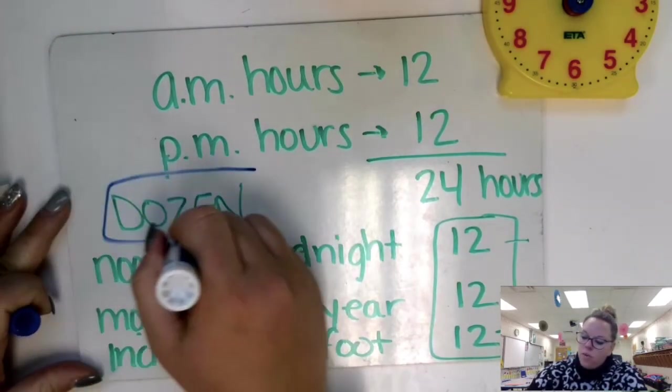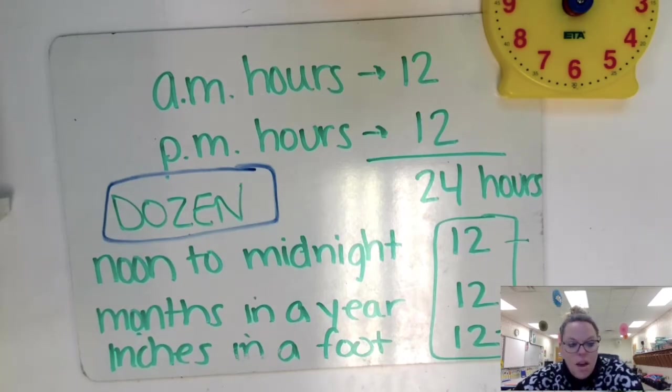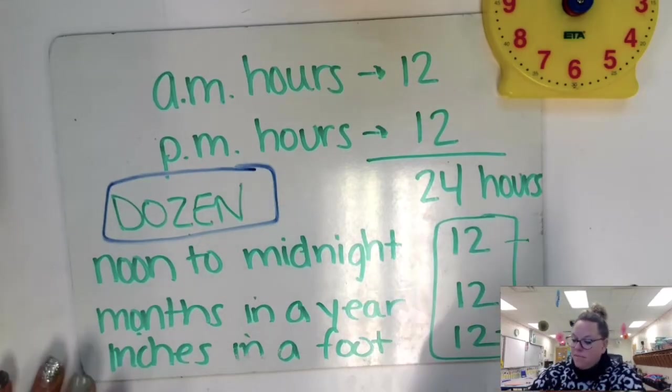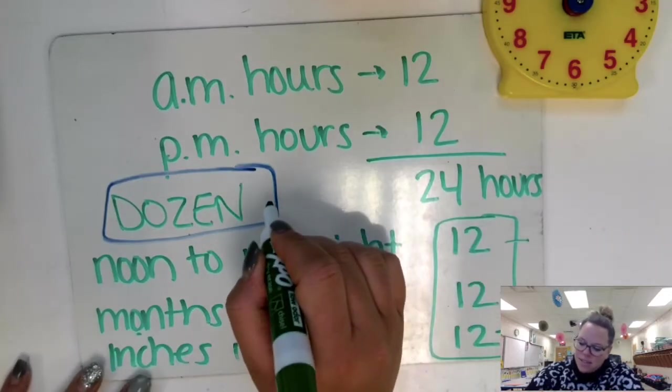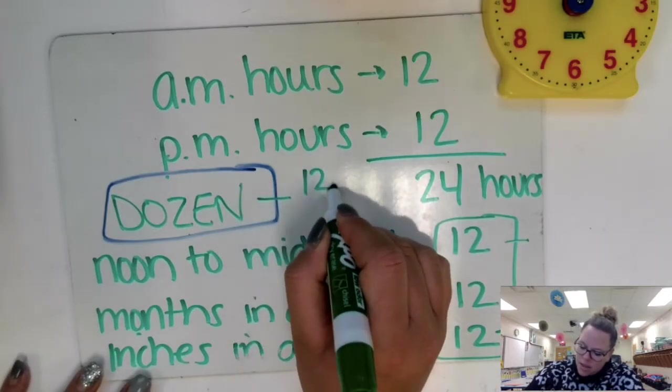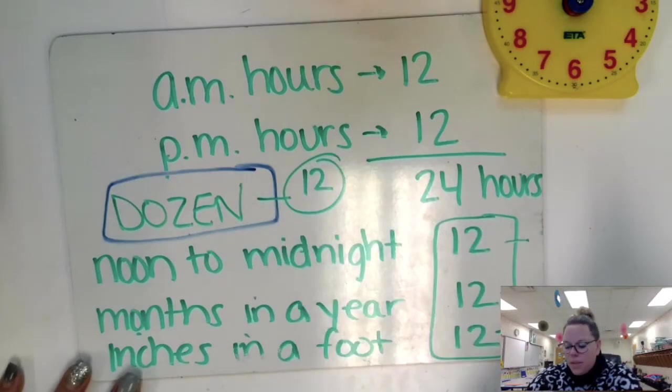12 of something is a special word called a dozen. When I have 12 of something, that is a dozen. Eggs are often sold by the dozen. There are 12 eggs in a dozen. If we have half of that, if we'd have half a dozen, that would be six. So a dozen is 12.